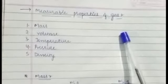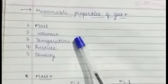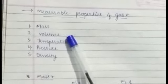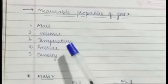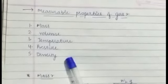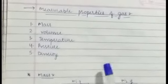Now we will see the gas measurable properties. There are 5 measurable properties: mass, volume, temperature, pressure and density.